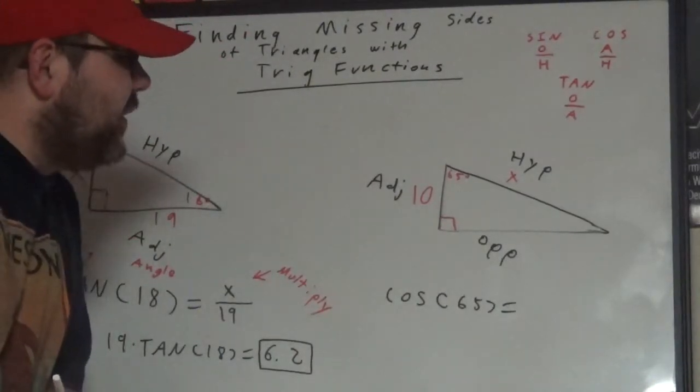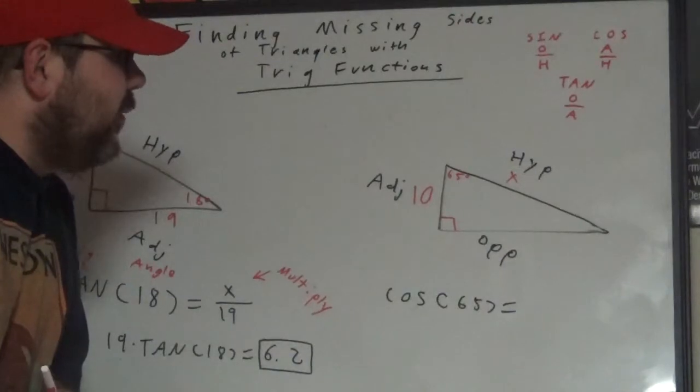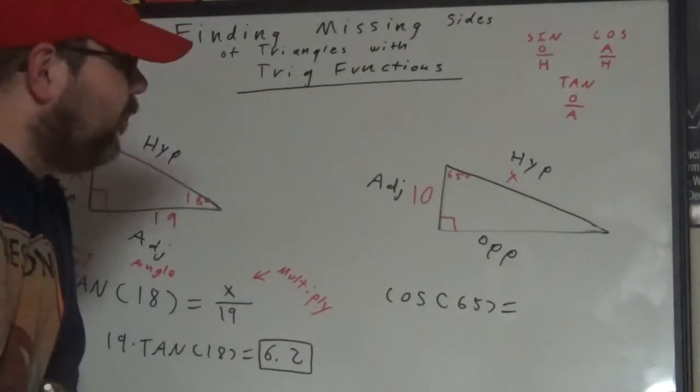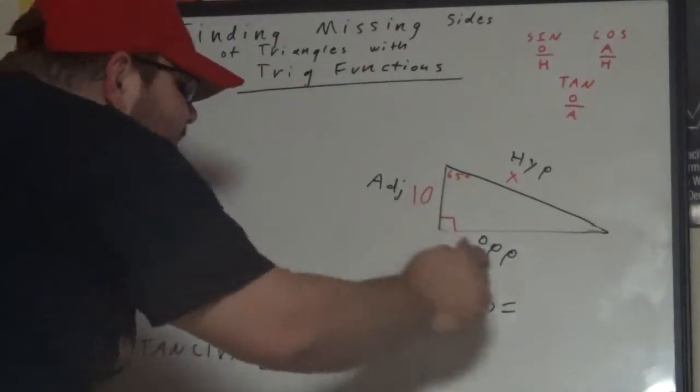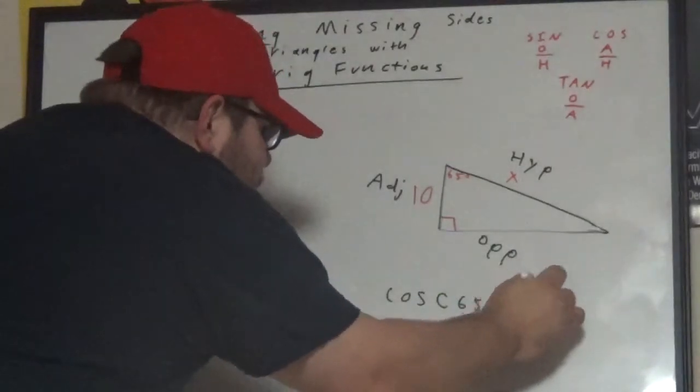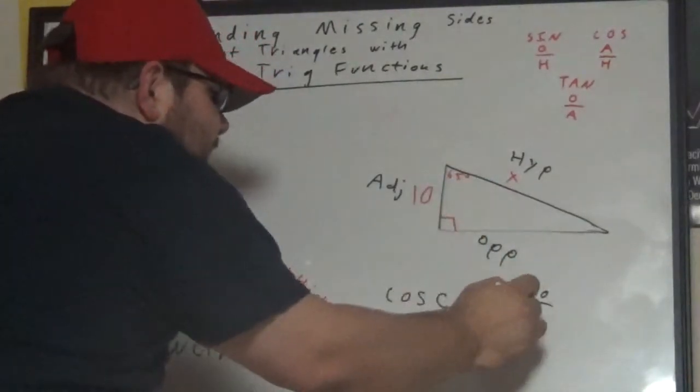Once I have cosine 65 equals, now I need to do adjacent divided by hypotenuse. Our adjacent side is 10 and our hypotenuse is x.